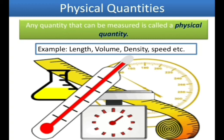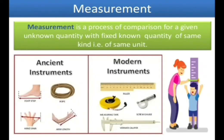Measurement is the comparison of a given unknown quantity with a fixed known quantity of the same kind, that is, of the same unit. For example, when we buy vegetables, we place a stone weight on one side of a balance beam and add vegetables on the other side until it balances. Here, with the fixed quantity we are measuring the unknown quantity. This process is known as measurement.